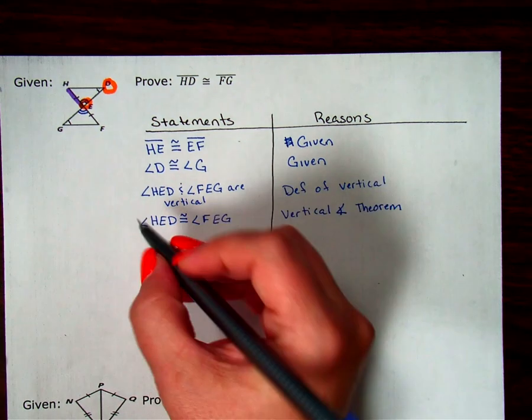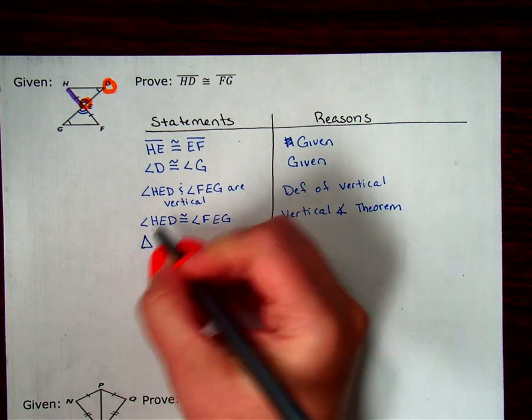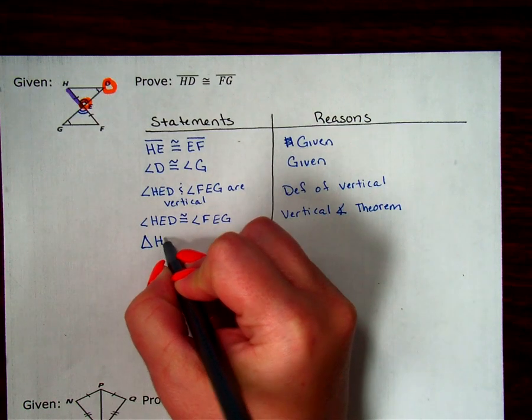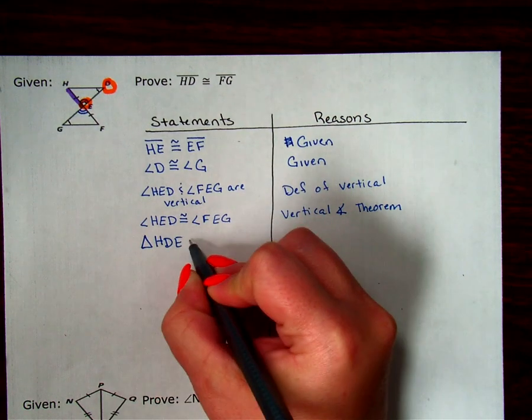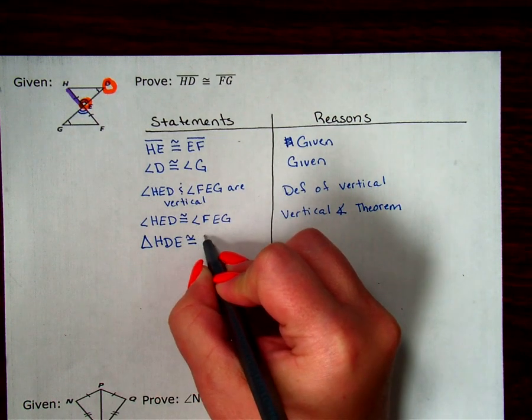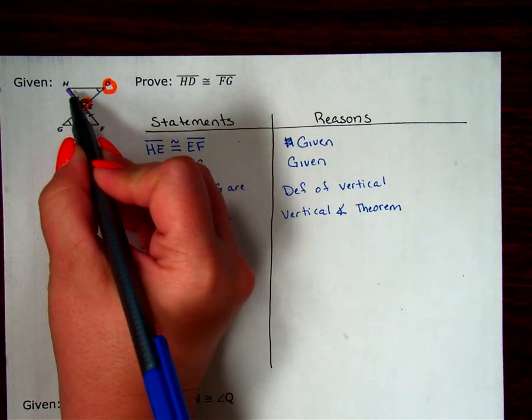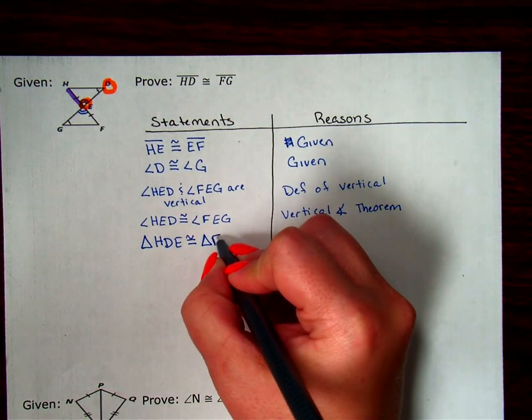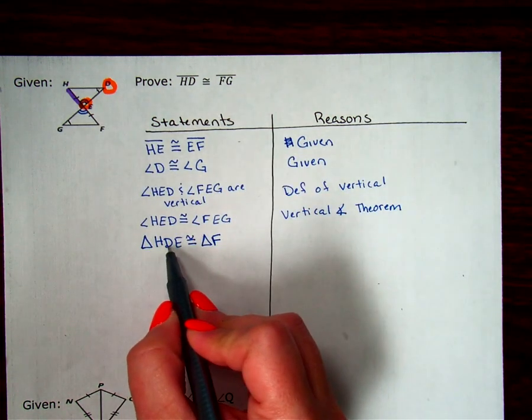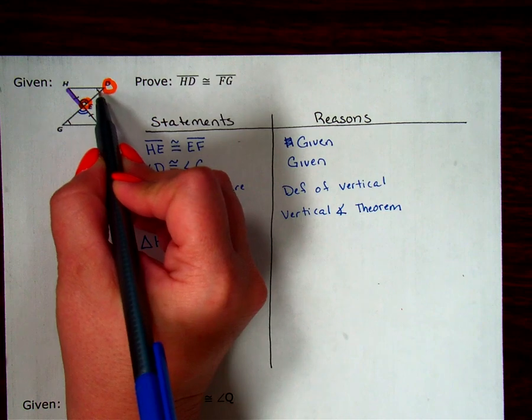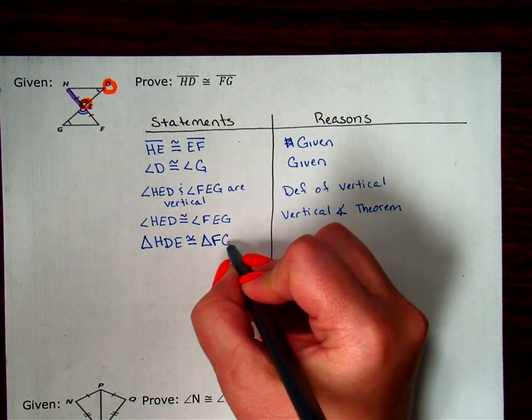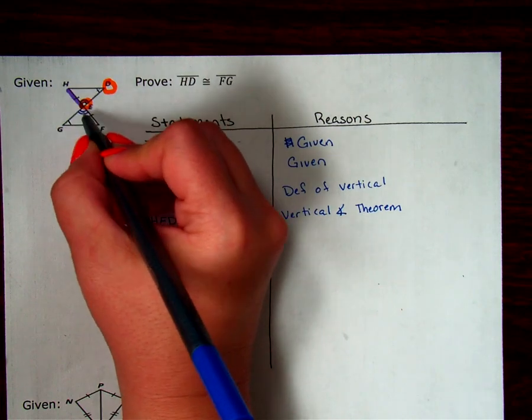So my first triangle, I'm going to call it triangle HDE. And I'm going to say it's congruent to triangle—if I started at H, the angle that's not marked, I'm going to start at F, the angle that's not marked. And then from H, I went to D, so I went across to the single marked angle. So from F, I'm going to go to G. And then I ended at the vertical angle E.